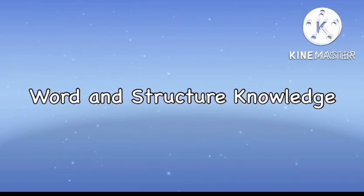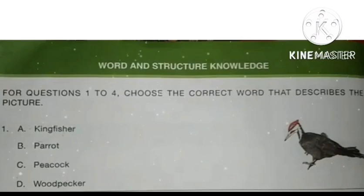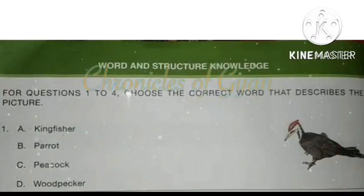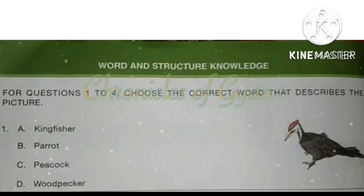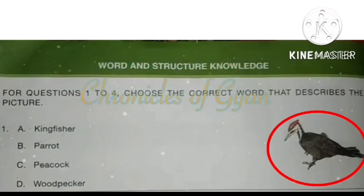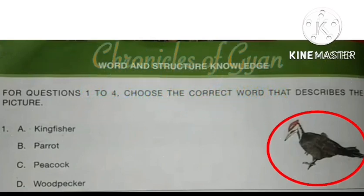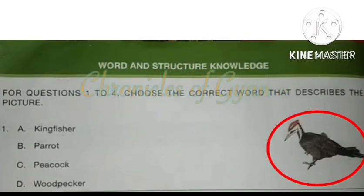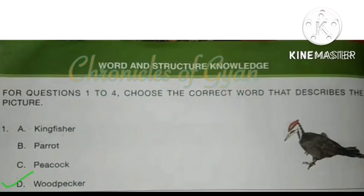The first section is word and structure knowledge. For questions 1 to 4, choose the correct word that describes the picture. This picture is of a woodpecker. The correct answer is option D: Woodpecker.